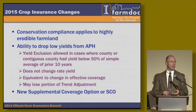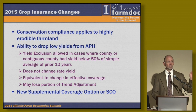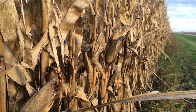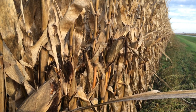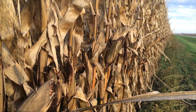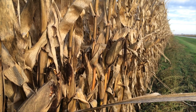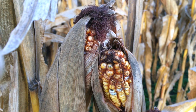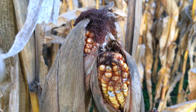A way of thinking about it is, instead of picking 65, 70, 75, 80, or 85% coverage of a number, you're kind of picking bushels and calculating what the implied coverage would have been. It's not a very complicated program if you think about it in those terms.